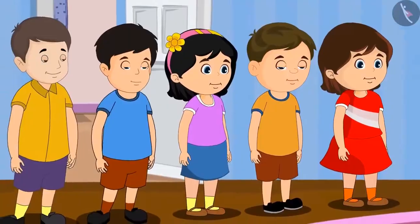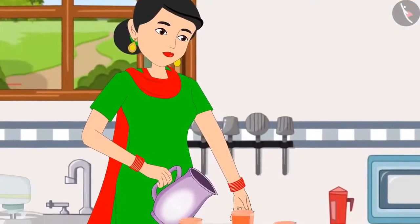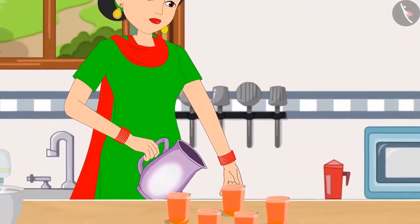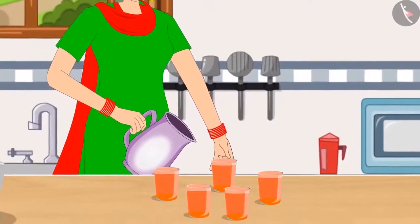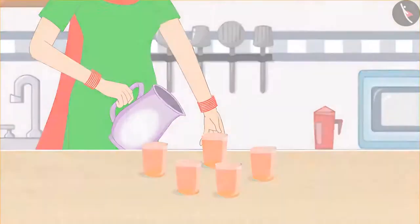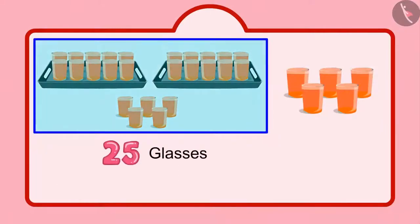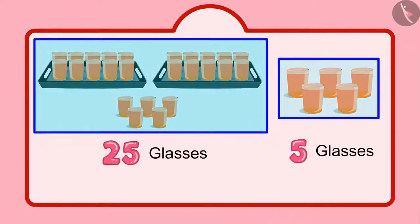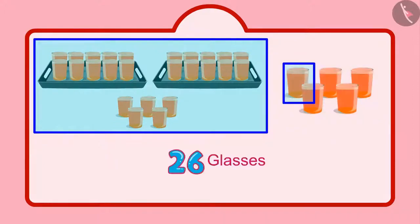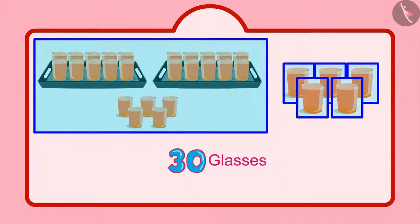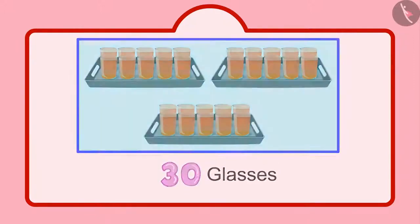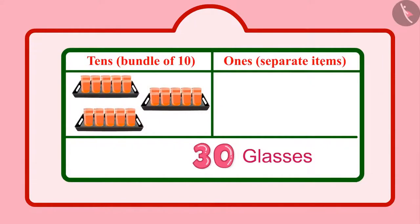After some time, some more friends of Chotu came home, and Chotu's mother made more sherbet for them. Let's see how many glasses of sherbet were made. Chotu distributed a total of 25 glasses of sherbet and after that 5 more glasses. So that makes it 26, 27, 28, 29, 30. That means 30 glasses. So, children, in 30 there are 3 tens and 0 units.